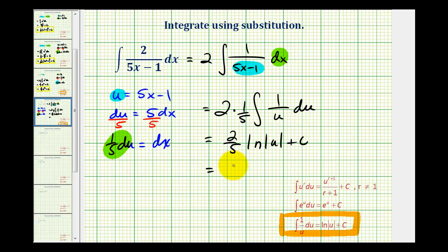We need this in terms of x, so now we'll replace u with 5x minus 1. So we have 2 5ths natural log absolute value of 5x minus 1 plus c as our antiderivative in terms of x.